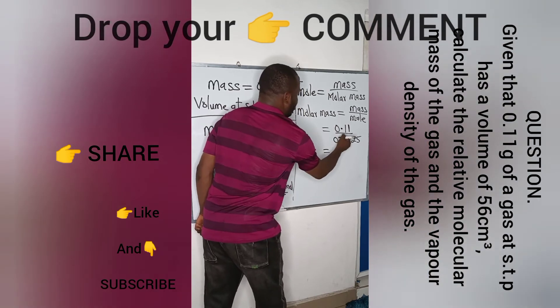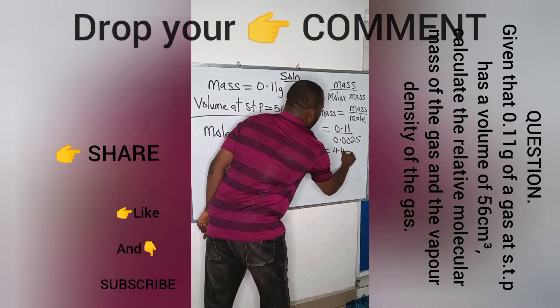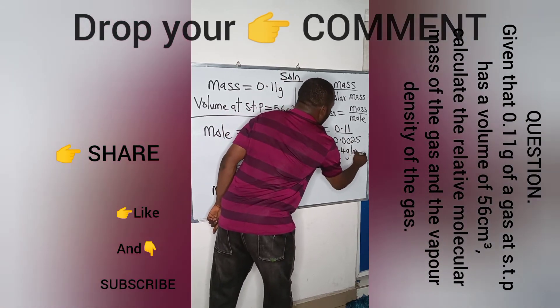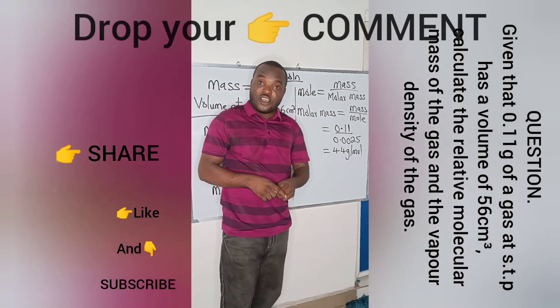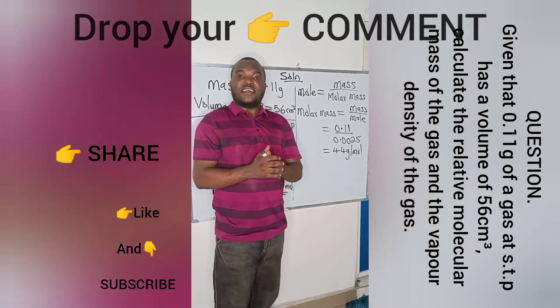That will give us, this divided by that should give us 44 grams per mole. Now that we have the molar mass, which we call the relative molecular mass of that gas, we can now find the vapor density.